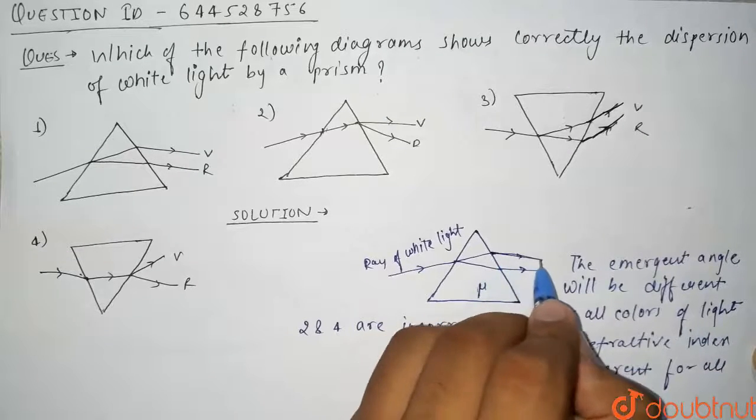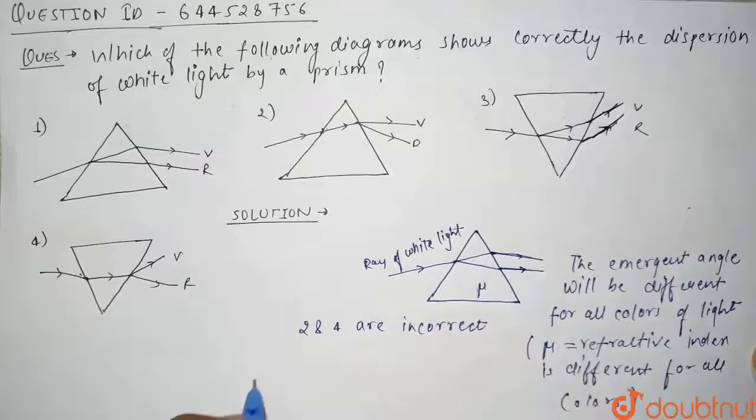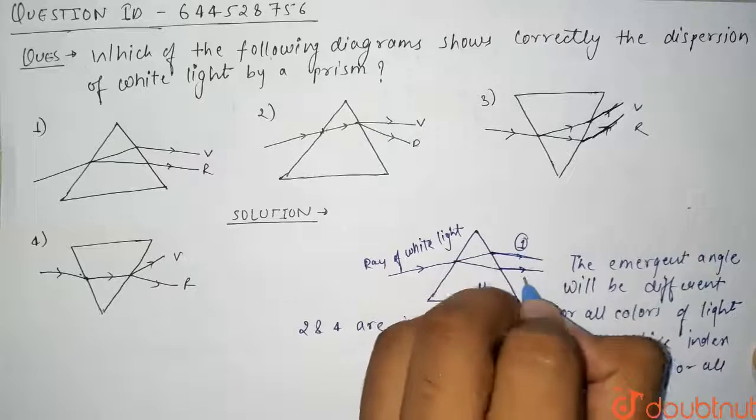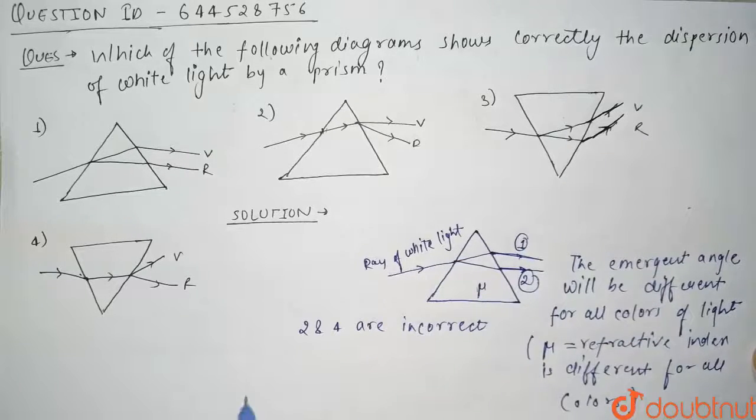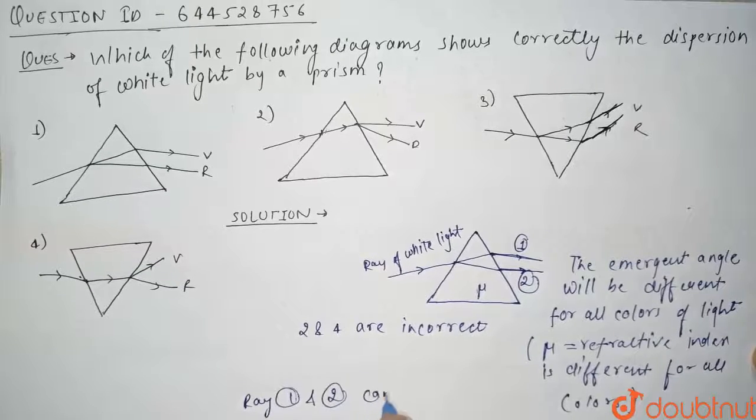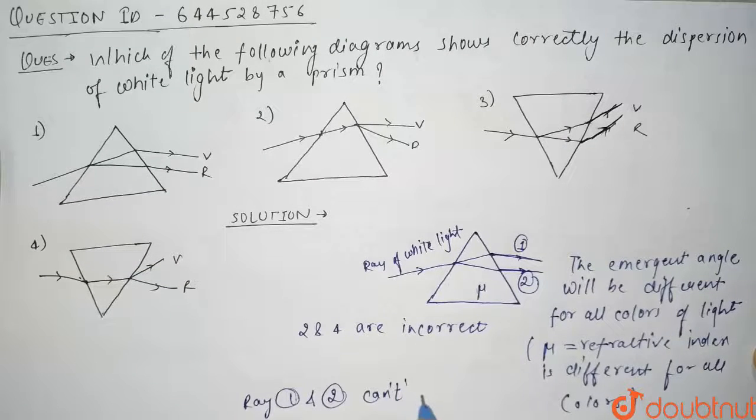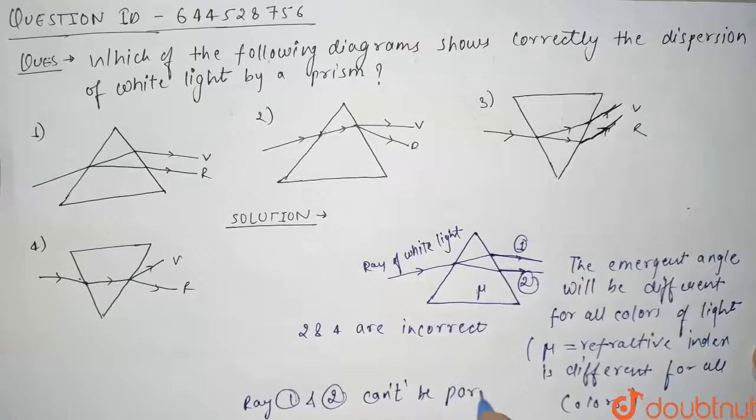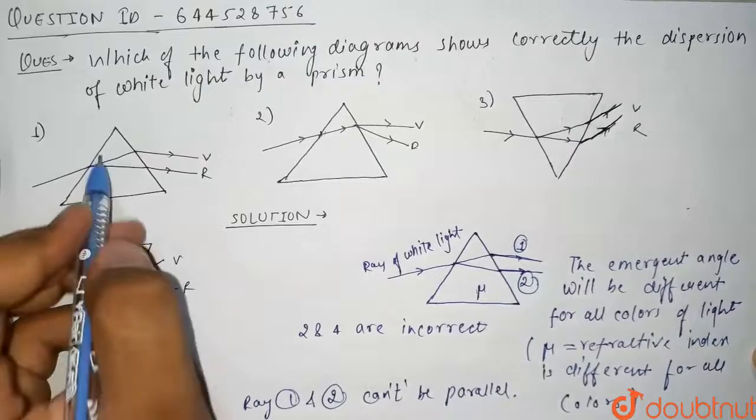Let us assume this is ray 1, this is ray 2. So from here we can see that ray 1 and 2 can't be parallel. But in diagram 1 we can clearly see that these violet and red rays are parallel to each other.